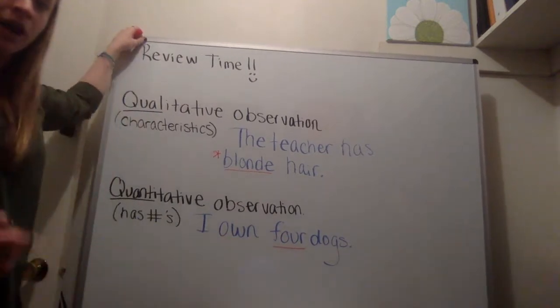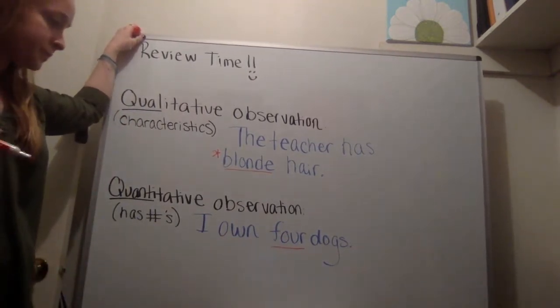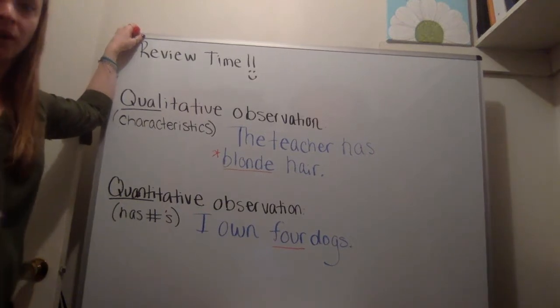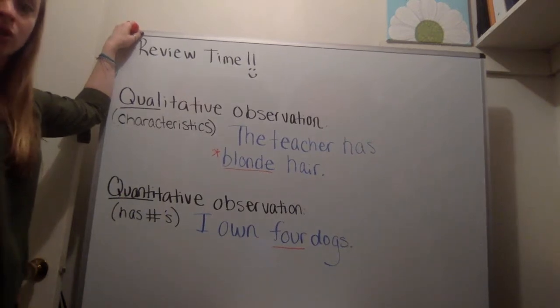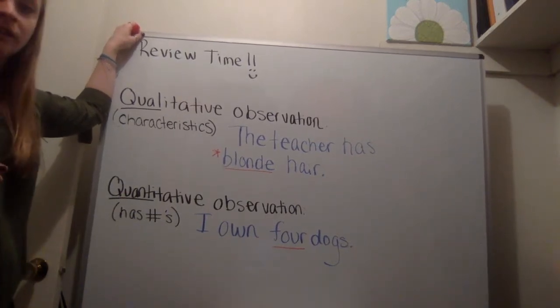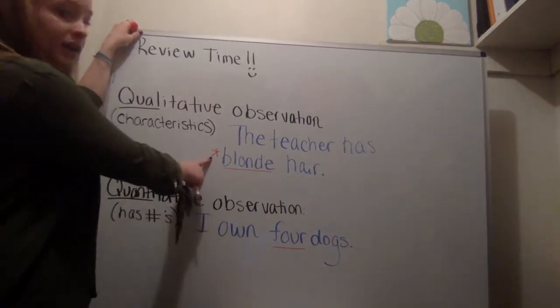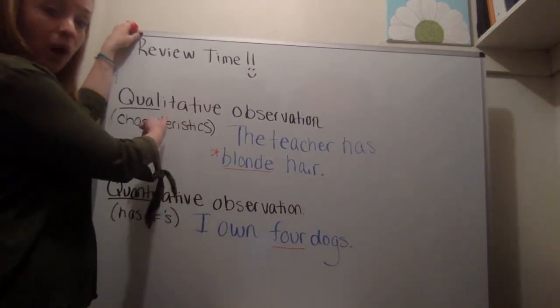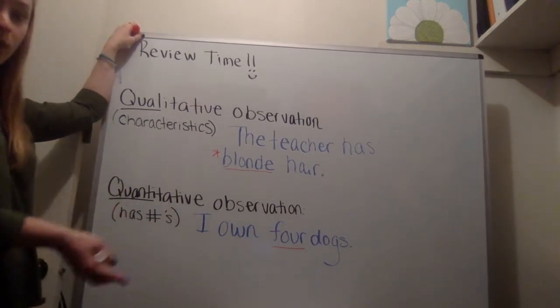Four, I wrote out, I own four dogs, which I don't, or you'd hear them all. But four would be that quantity. That number that goes with what I'm describing. So you can see four dogs. So I want you guys to think about the difference between the two. So blonde is a description that would be qualitative, and then four would be a quantity, which means it's a quantitative observation.